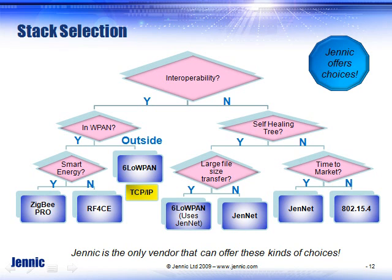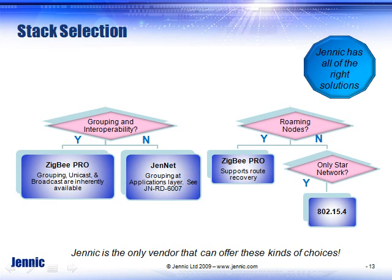One of the important criteria for stack selection is: do you want to be interoperable? ZigBee Pro allows you to be interoperable, and that's one of the first decisions you should make. If you don't need interoperability, you have other software stacks you can select that would work in your application. If you want to be interoperable within a wireless personal area network, you would need ZigBee Pro. If you want to be interoperable with other devices that may be wired or not wired, a stack like 6LoWPAN would be a better fit. 6LoWPAN uses UDP, which allows it to segment and reassemble large files, such as sending a JPEG image over a network — your user application doesn't have to handle that; it's done automatically by the UDP layer.